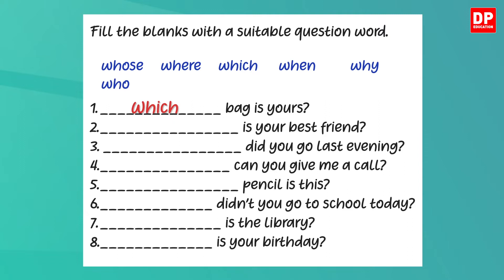Now let's check the second one. Here the question is: blank is your best friend. The WH question word required here should refer to a person. It should be 'who.' Who is your best friend?